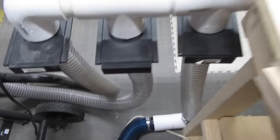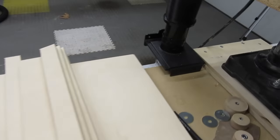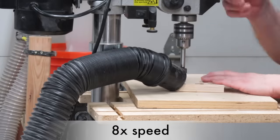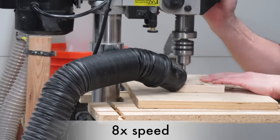Now I'll close the table saw's gate and open the one over here, which I'll use for the drill press. I position the flexible hose where I want it and drill.